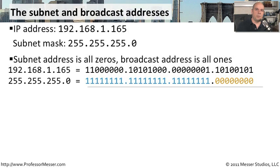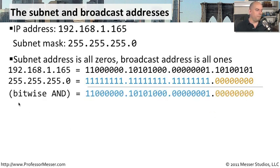Let's take another example. Someone may say: here's the IP address of a device — 192.168.1.165 — and the subnet mask it's using. What network is it on? We perform exactly the same calculation. We take the IP address, write out the binary equivalent, take the subnet mask, write out its binary equivalent, and then perform what we call a bitwise AND. Every time there is a one in the subnet mask and a one in the IP address, we bring down a one. Any time there's a one and a zero in either direction, we put a zero.